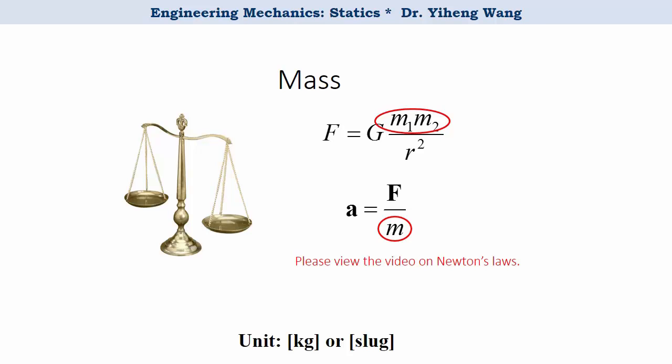In SI system, the unit of mass is given in kilograms, while in the US customary system, its unit is given in slugs. Now we have discussed length, time, and mass. Please note that in classical mechanics, length, time, and mass are absolute concepts that are independent of each other.